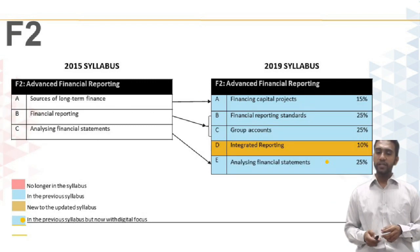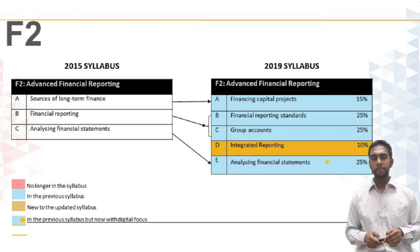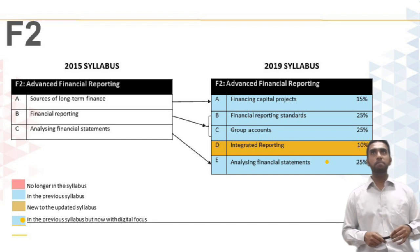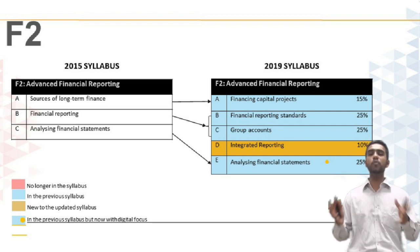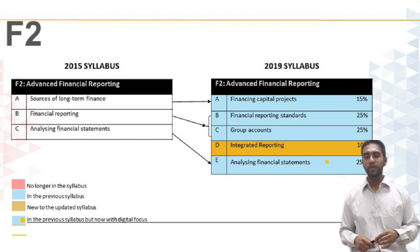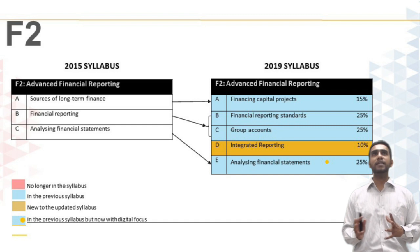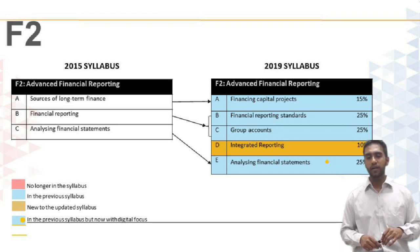The final subject at this level is F2, and there are a couple of small changes here. Sources of long-term finance, topic A, remains. Financial reporting, topic B, also remains although it's been split into two topics. The weightage for financial reporting has gone up slightly because all group accounting has been moved into F2 — there's no more group accounting in F1. You've now got two topics covering financial reporting: one is financial reporting standards, which focuses completely on your standards.